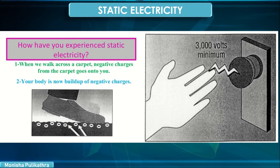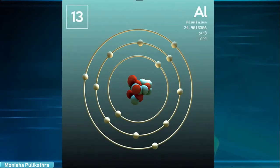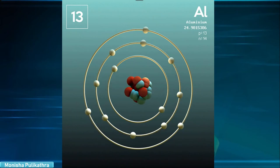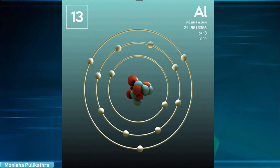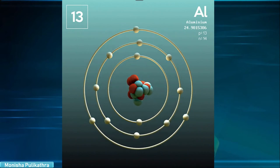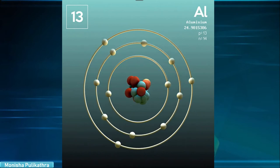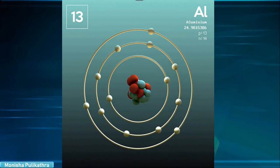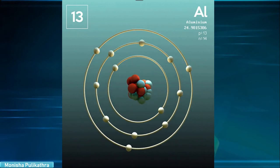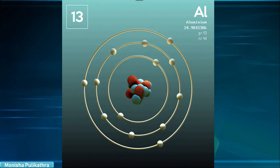How have you experienced static electricity? When we walk across a carpet, negative charges from the carpet go onto you — your body is now built up of negative charge. To understand how stationary charges allow people to get zapped, recall the particles that make up an atom: protons, neutrons, and electrons. Out of these three, electrons are easily removed from an atom since the forces that bind them are weaker than those that hold neutrons and protons together in the atomic nuclei.